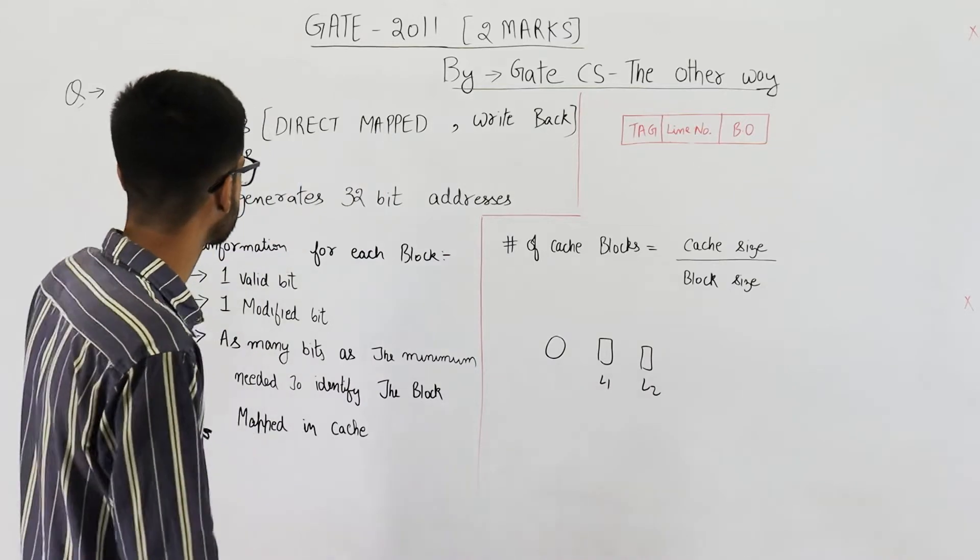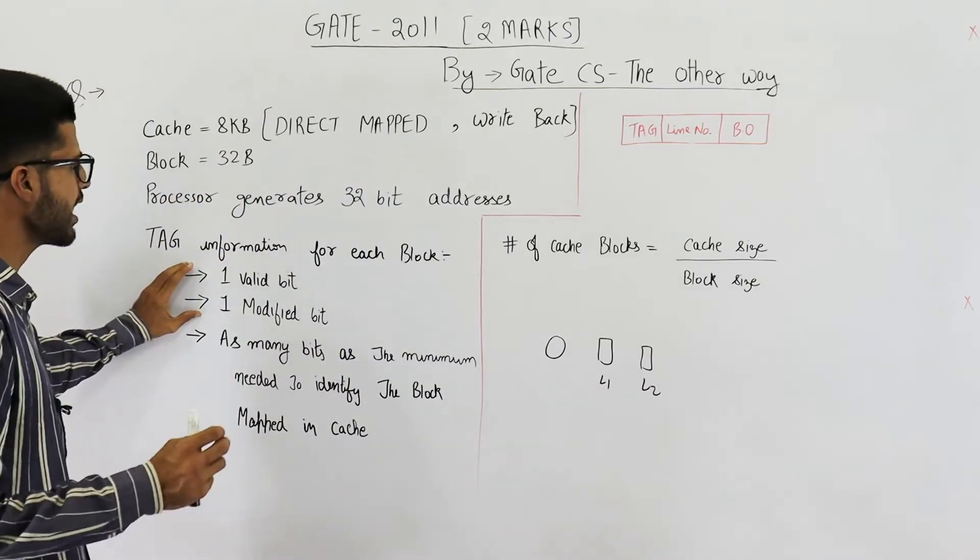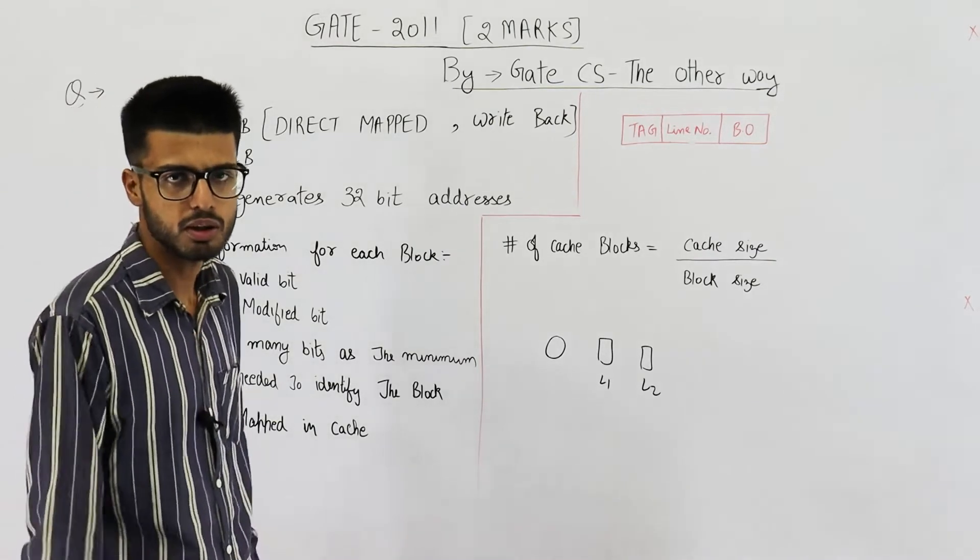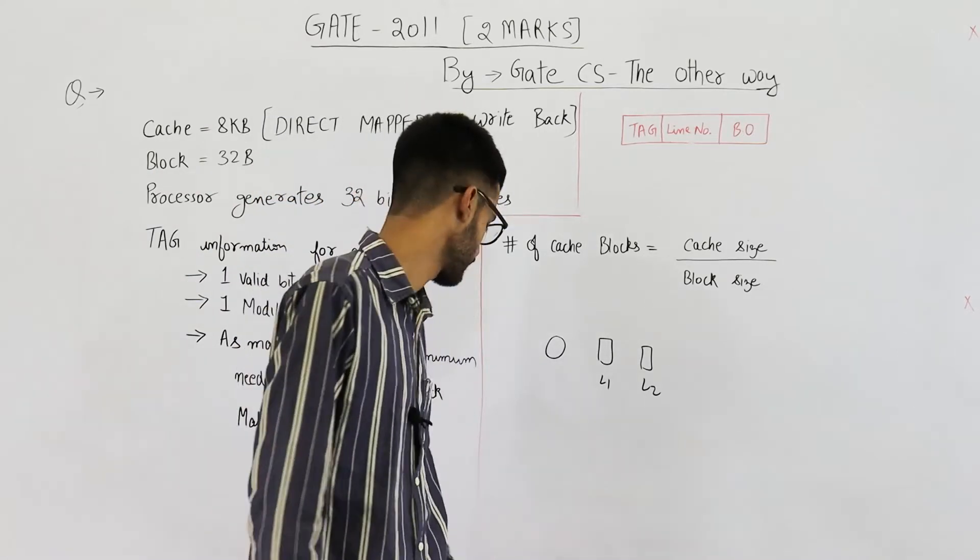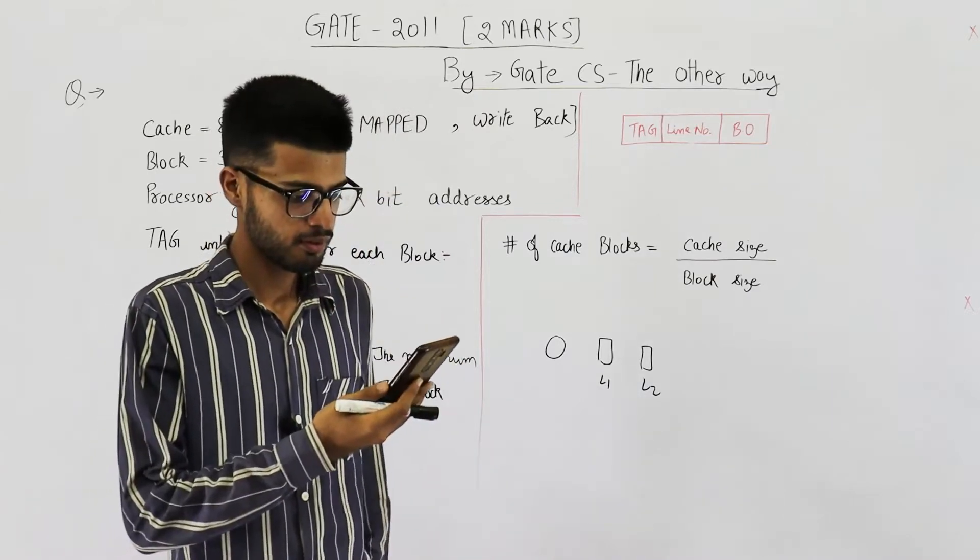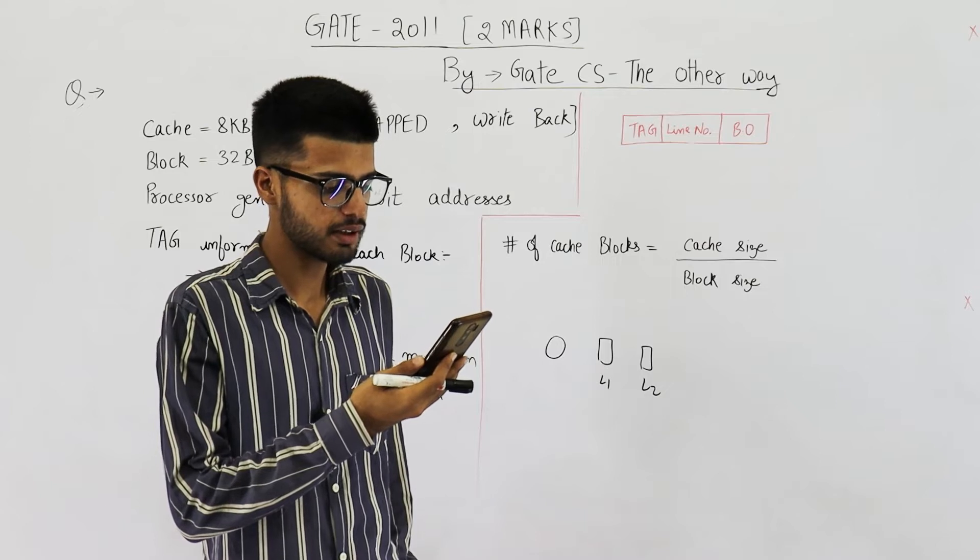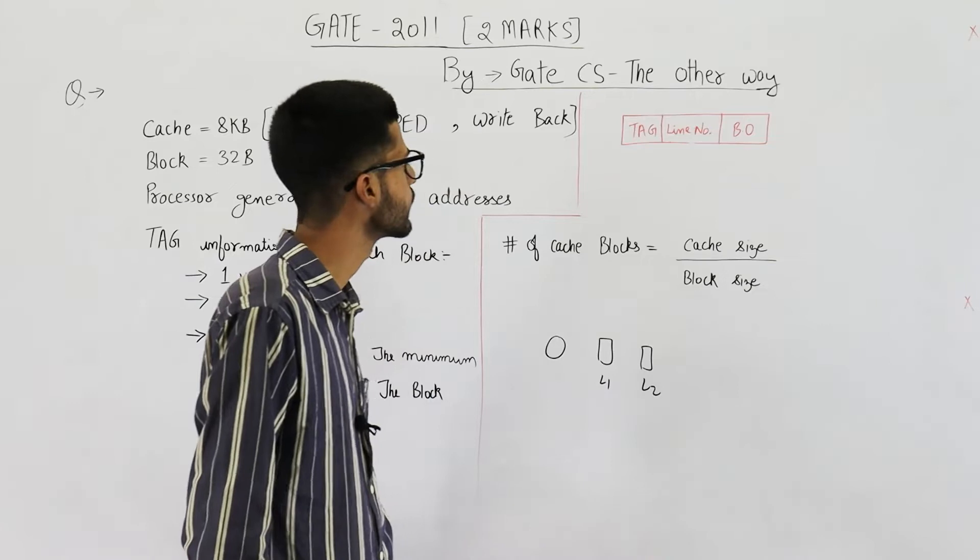Let's now discuss our question. They are saying if these two bits are required along with the tag bits for every cache block, how much memory is required for tag directory? Let me just read the last line. What is the total size of memory needed at cache controller to store metadata? It's actually the tag directory only.